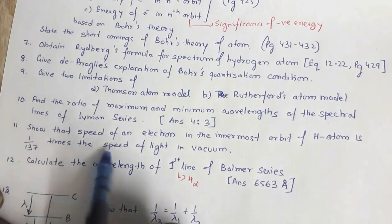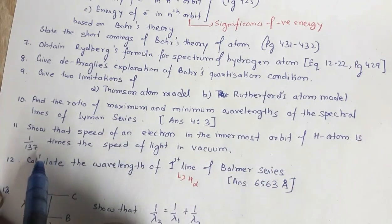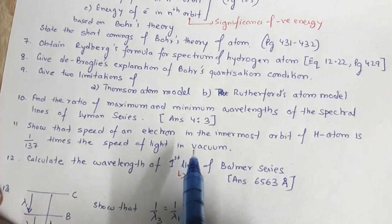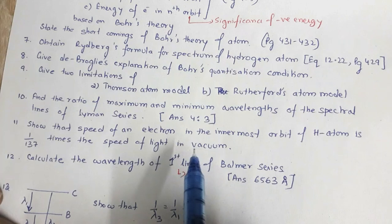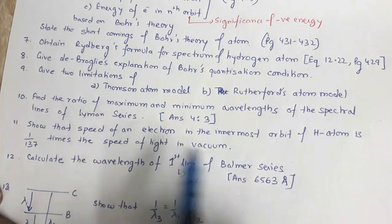Then show that speed of electron in the innermost orbit of hydrogen atom is 1 by 137 times the speed of light in vacuum. Or they may ask you write short note on fine structure constant. So the answer to both this question and that question are same.